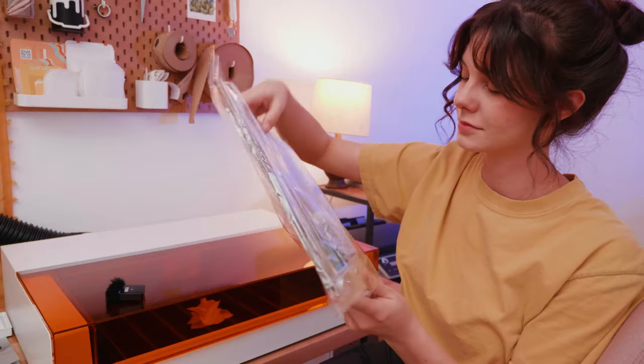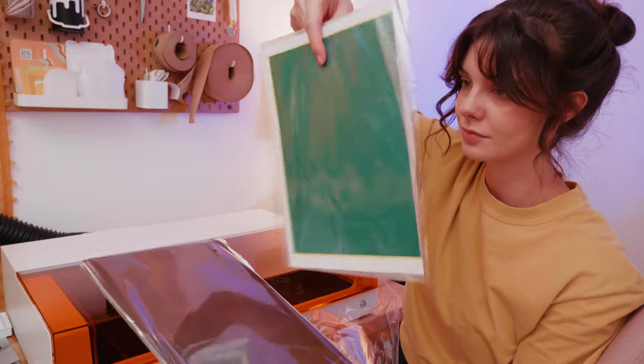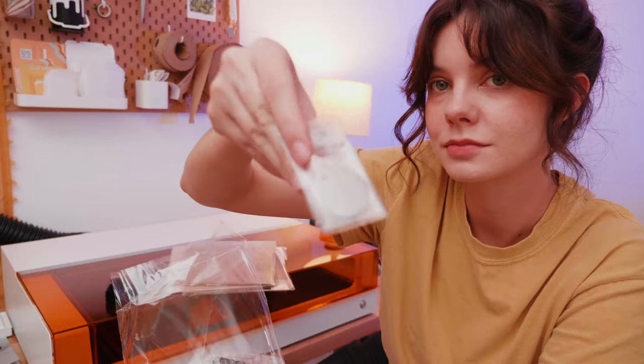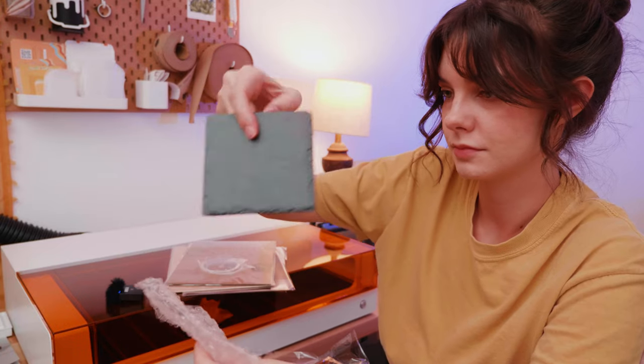They also sent some sample materials like marking paper for engraving on glass, laserable PU faux leather, a sheet of plywood and black acrylic, metal jewelry, and a square rock coaster.